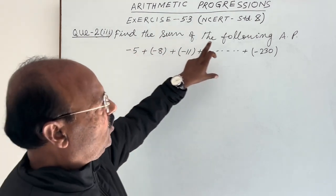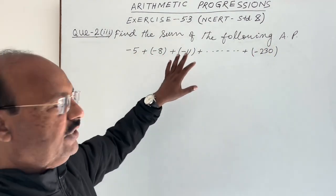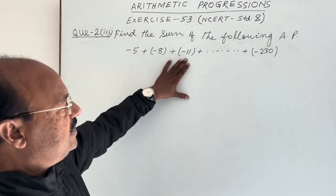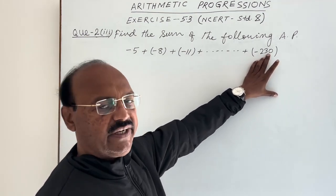Question is find the sum of the following arithmetic progression. The arithmetic progression is given here: minus 5 plus minus 8 plus minus 11 and so on up to minus 230.